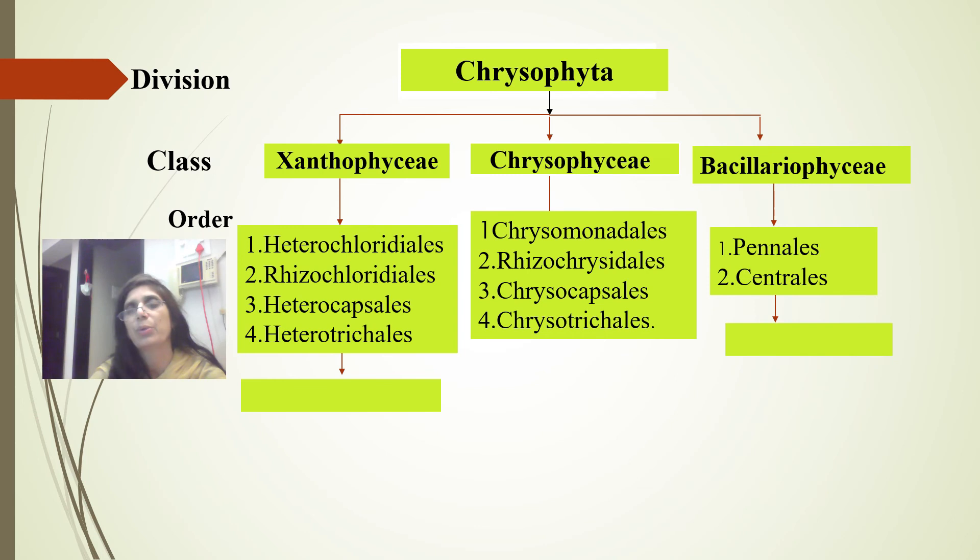Whereas in Bacillariophyceae, he included only two orders: Pennales and Centrales, the pennate diatoms and centric diatoms mostly. In the group Xanthophyceae, which particular topic we are going to study is none other than Vaucheria.